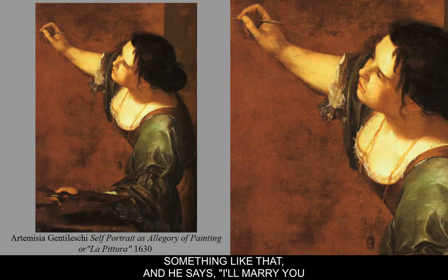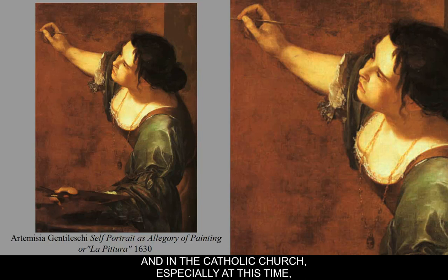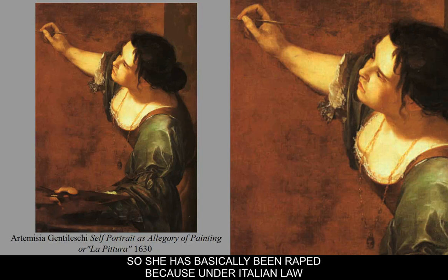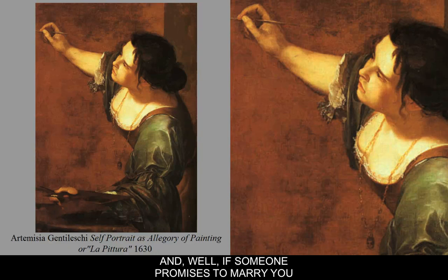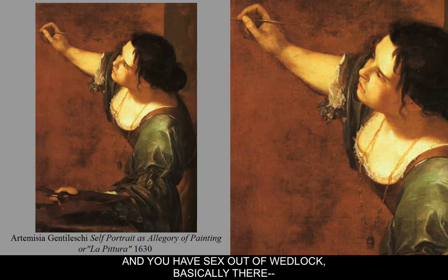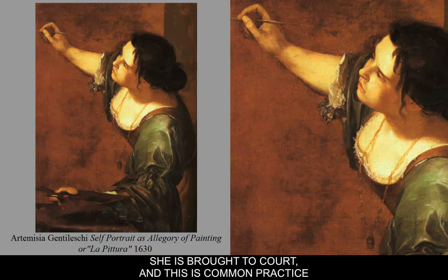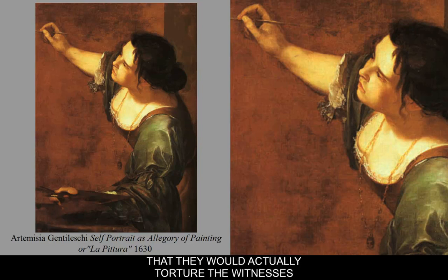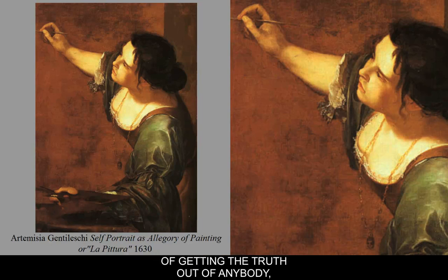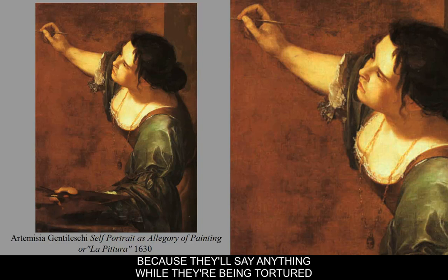It turns out Tassi is already married, and in the Catholic Church at this time you could not get divorced. So she has basically been raped, because under Italian law at that time, if someone promises to marry you and you have sex out of wedlock, it's a breach of contract and it's rape. What happens next is she is brought to court. This was common practice in the 1600s — they would actually torture witnesses to see if they could get the truth out of them, even though this isn't a really effective method since people will say anything to stop being tortured.